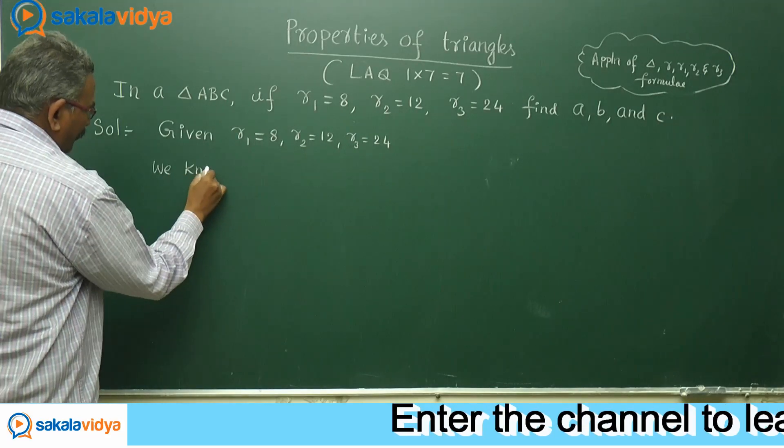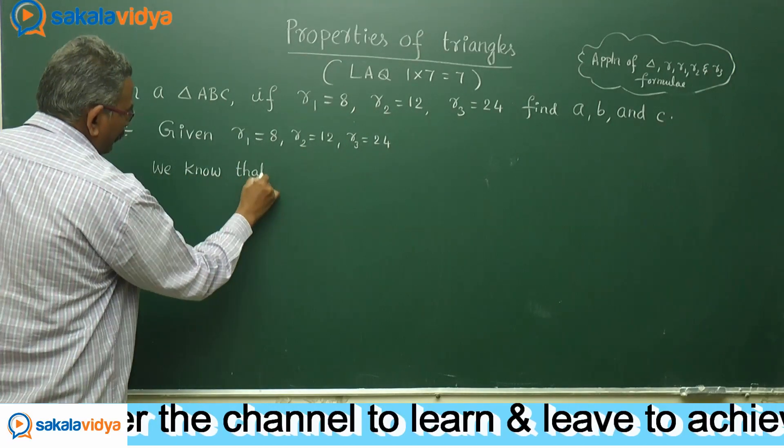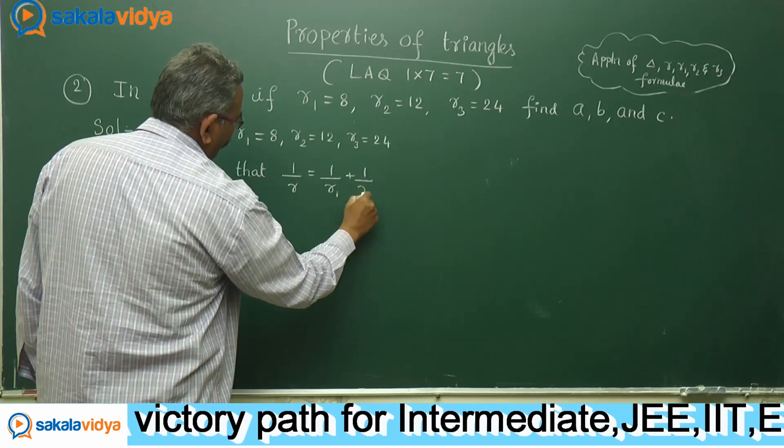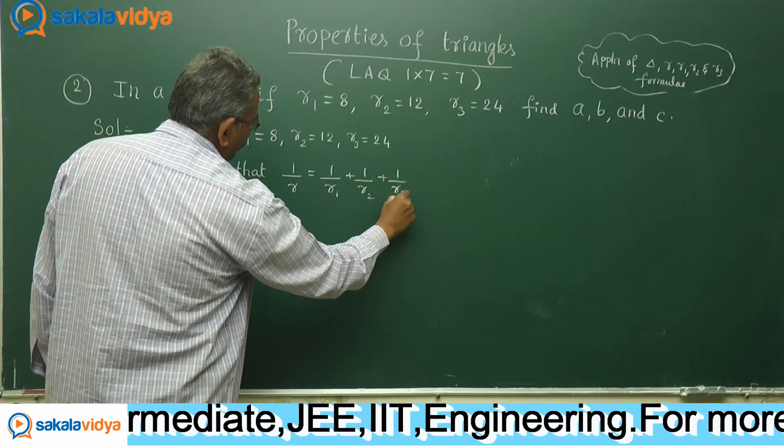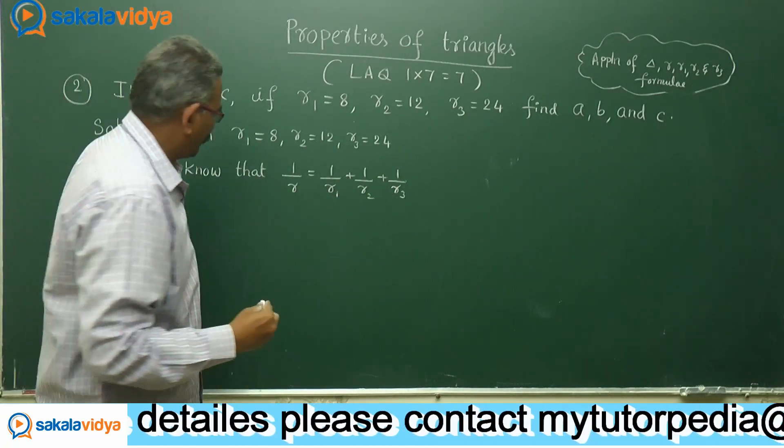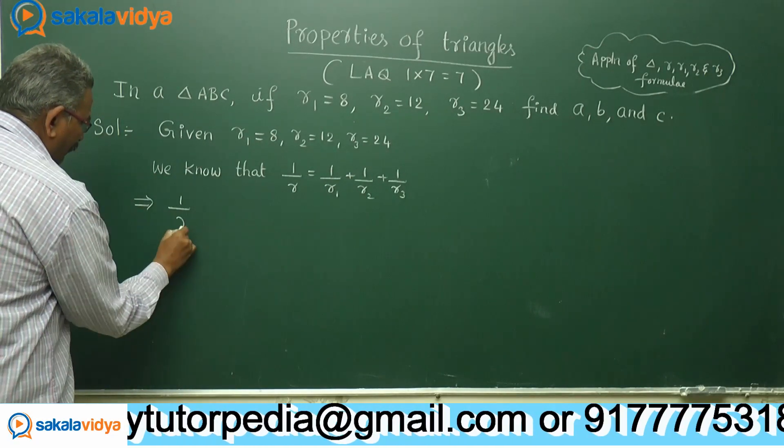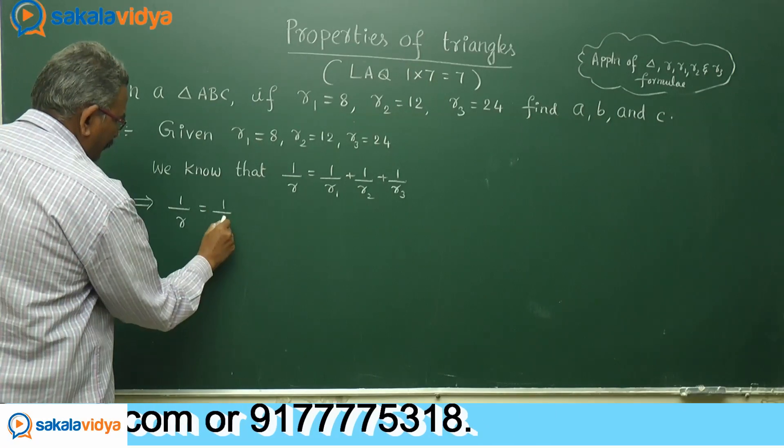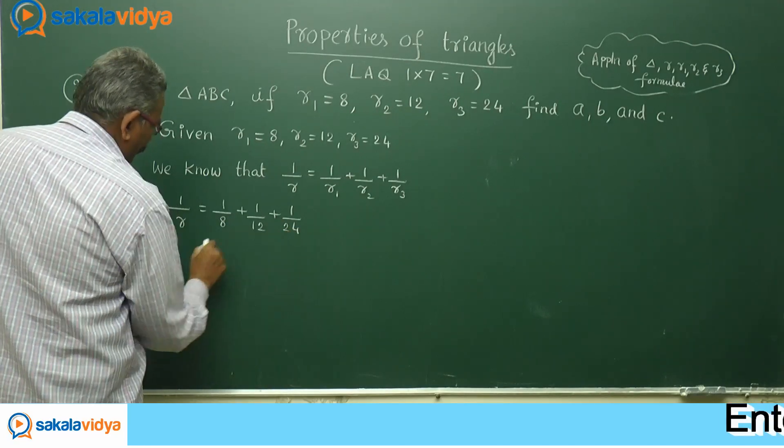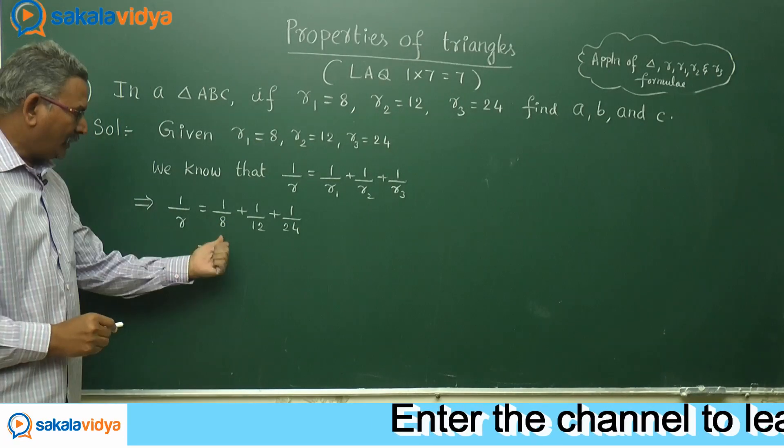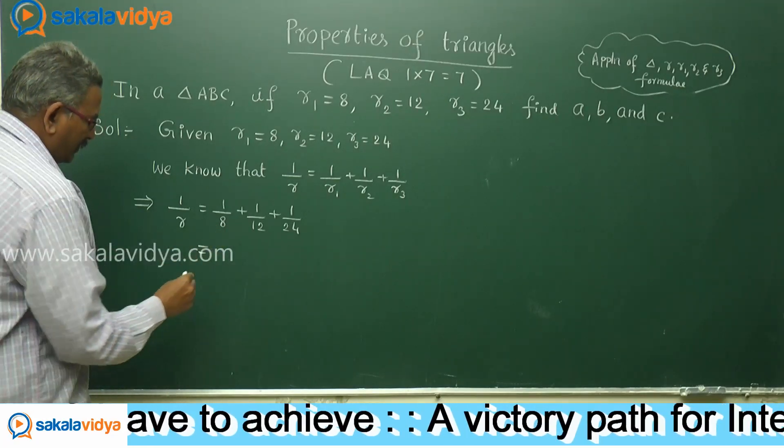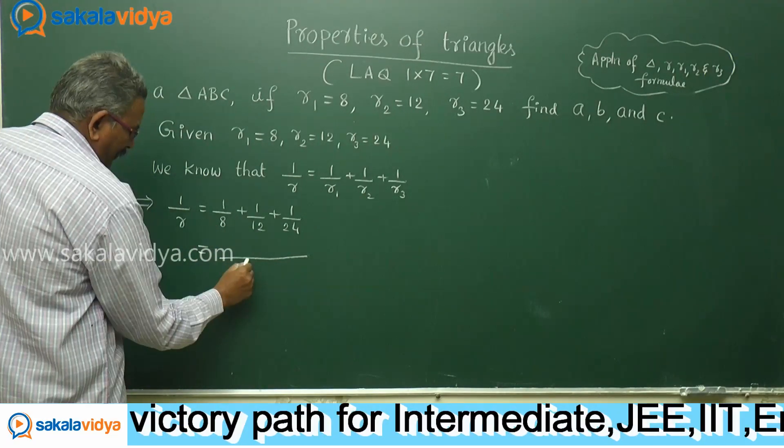We know that 1 by r equals 1 by R1 plus 1 by R2 plus 1 by R3. This can be formulated yourself, just try as practice. Now 1 by r equals 1 by 8 plus 1 by 12 plus 1 by 24, simple addition of fractions. What will be the LCM here? 8, 12, 24.